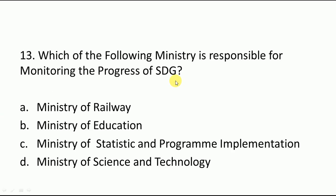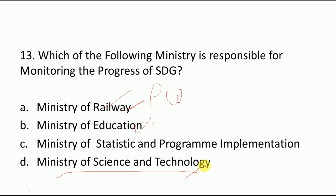Note that Antonio Guterres is the current United Nations Secretary-General. Which ministry is responsible for monitoring the progress of SDGs? The minister responsible is Dr. D.V. Sadananda Gowda. I hope you know your ministers — Minister of Railways is Piyush Goyal, Minister of Education is Ramesh Pokhriyal Nishank, Minister of Science and Technology and Health Minister is Dr. Harsh Vardhan. So the correct answer for this question is the Ministry of Statistics.